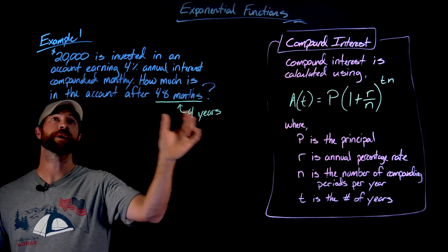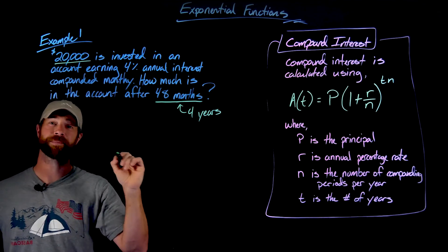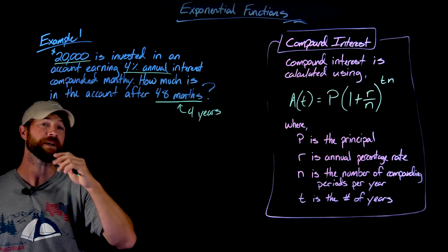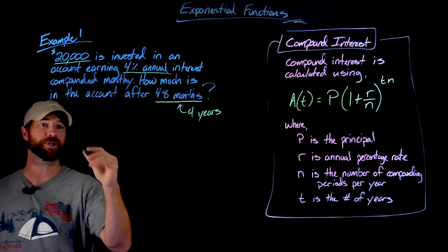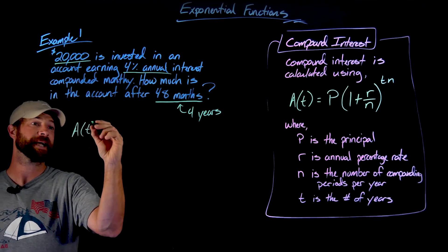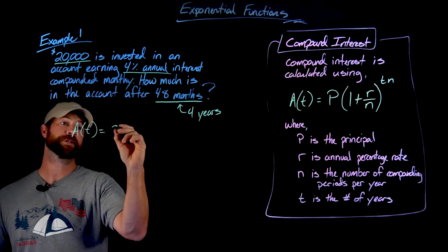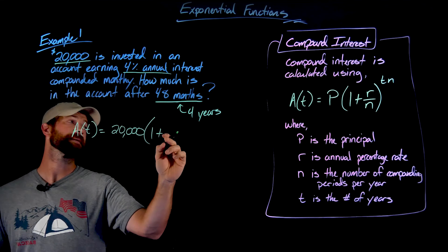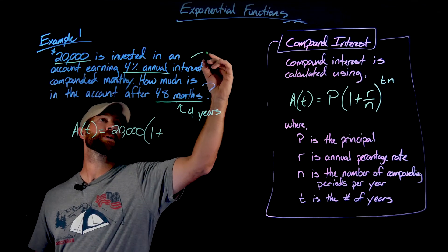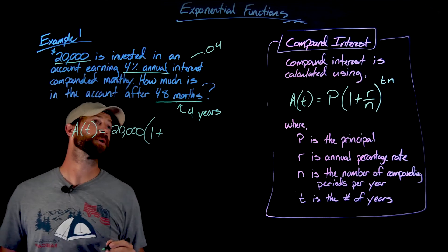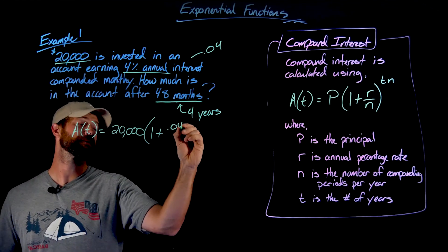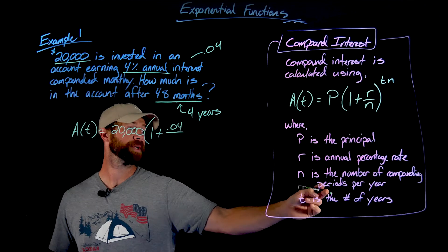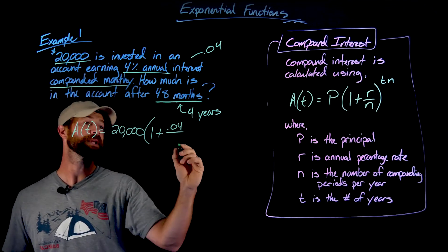So we know our investment is for 4 years. We have $20,000. That is the principal, the P value. We have 4% annual interest. That will help us with our R value. I'm just going to throw all this information in and we'll look at it. So we have the amount in the account after t years is our principal of 20,000 times 1 plus our rate divided by n. So R in this case is 4%. We know that 4% equals 0.04. So the R in this case is 0.04. We've always got to write our percent as a decimal. We're dividing that by the number of compounding periods per year. We're compounding monthly, so that is 12.